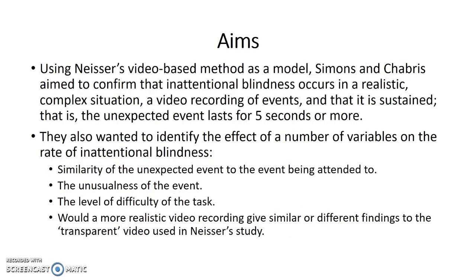Using Neisser's video-based method as a model, Simon and Chabris aimed to confirm that inattentional blindness occurs in a realistic, complex situation — a video recording of events — and that it is sustained, meaning the unexpected event lasts for five seconds or more. They also wanted to identify the effect of several variables: similarity of the unexpected event to the attended event, the unusualness of the event, the level of difficulty of the task, and whether a more realistic video recording would give similar or different findings to the transparent video used in Neisser's study.